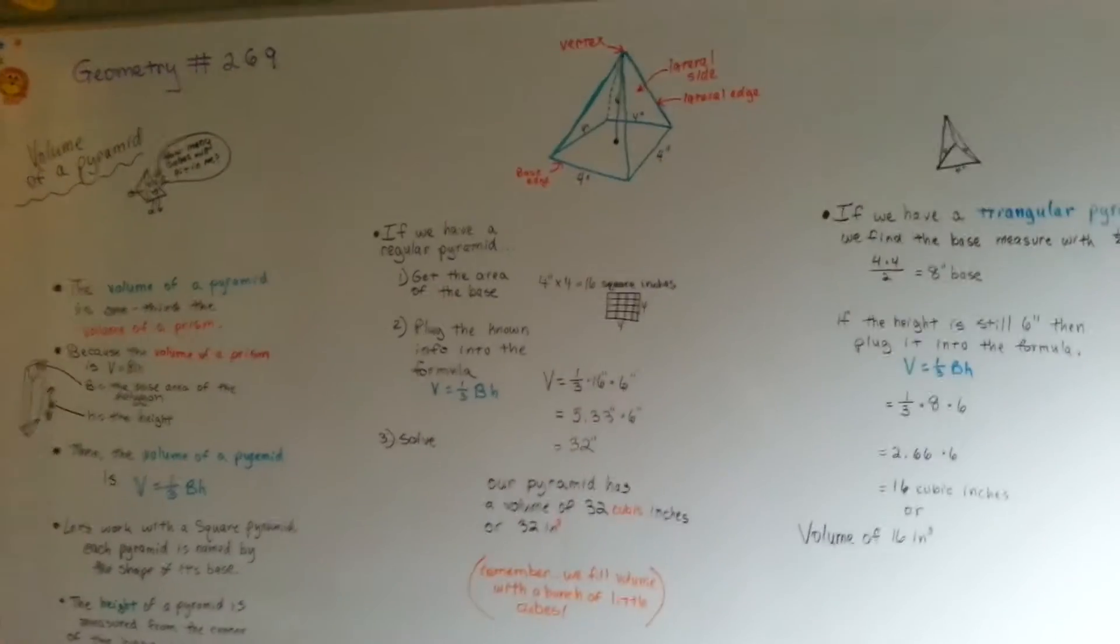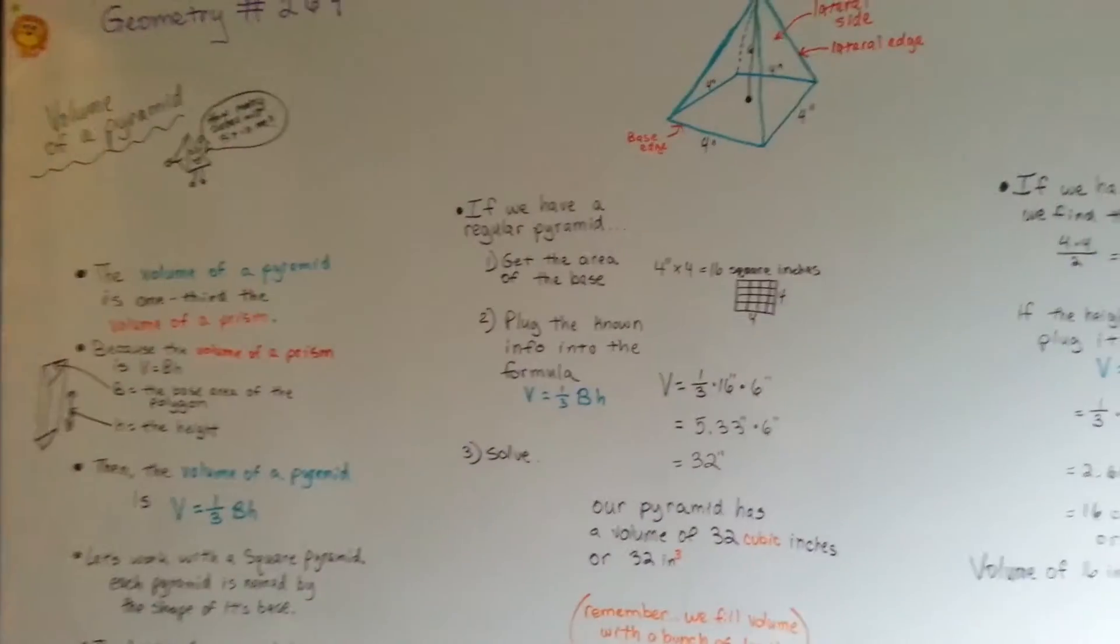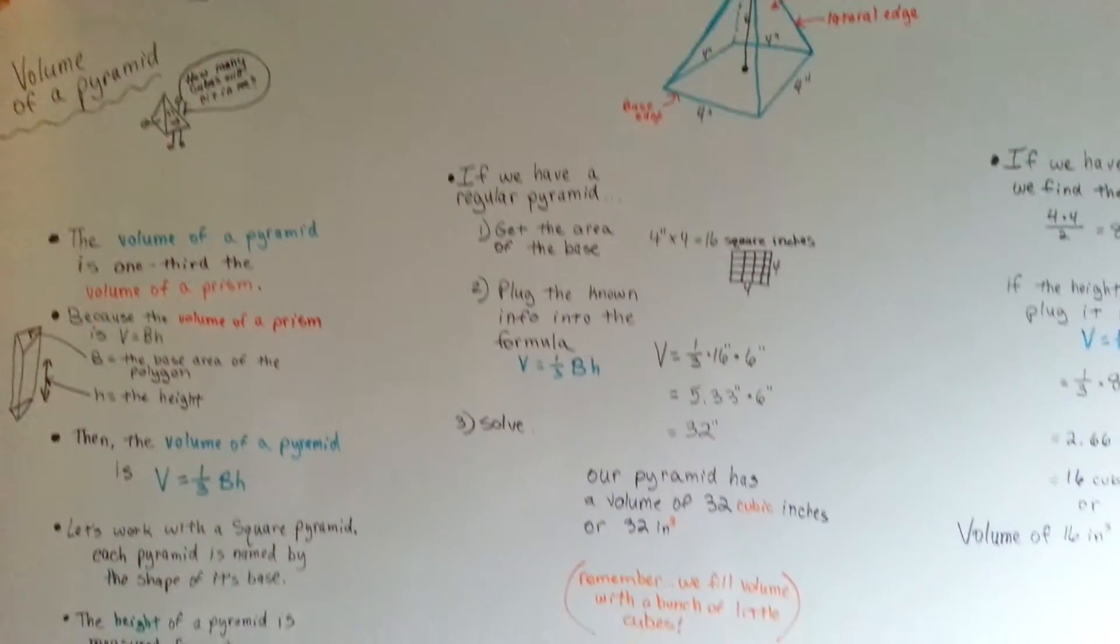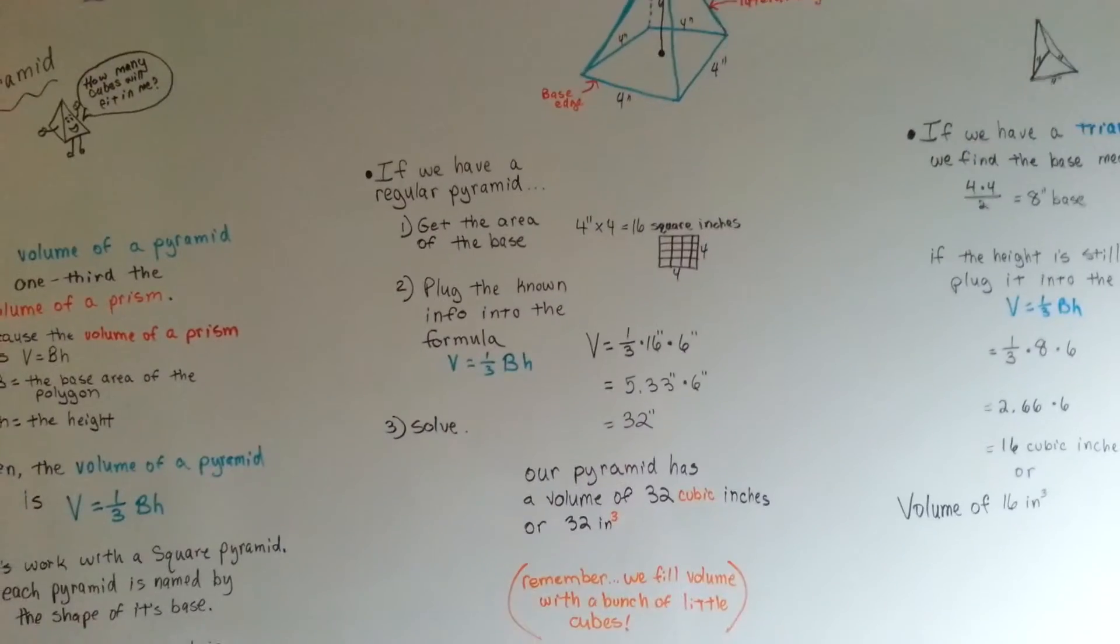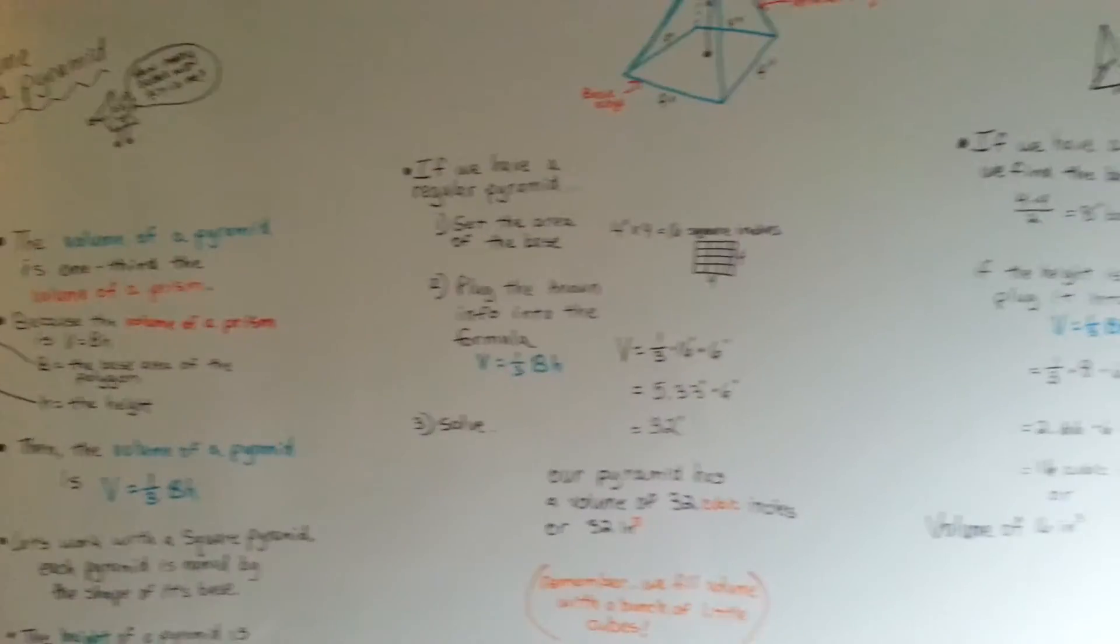We're going to continue on talking about shapes. This is how you do the volume of a pyramid. And, the next thing we're going to talk about is cylinders.